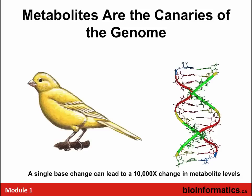Metabolites are the canaries of the genome — this is the amplification effect discussed with the pyramid. This is another reason metabolomics is important. It's why it's used in clinical chemistry, and why it's used in phenotyping in plants, microbes, and mammals.